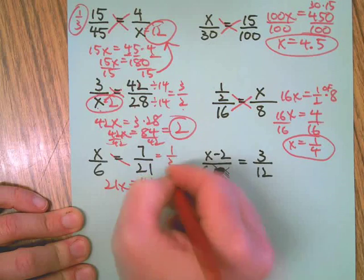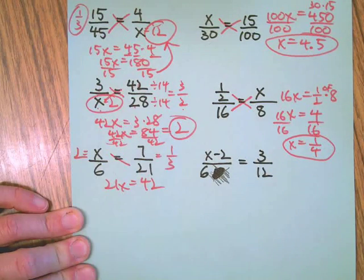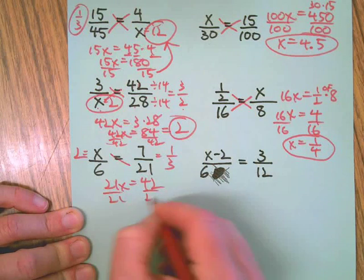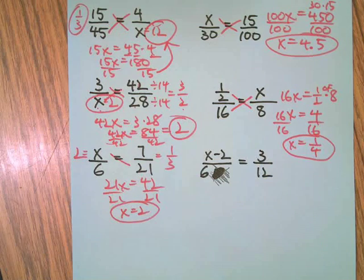Divide both sides by 16 and we get X is a fraction, it is one-fourth. Cruising along. Next problem, 21X equals 42. Hopefully you saw that this was a 1:3 relationship, so X is going to equal 2.